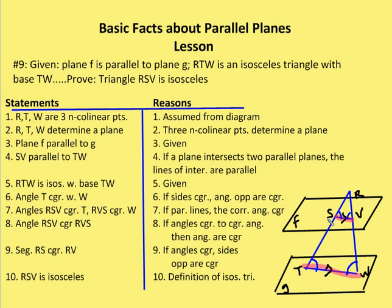If I have two angles that are congruent to congruent angles, then RSV and RVS are congruent to each other. Now I can say that segment RS is congruent with segment RV, because if angles are congruent in a triangle, the sides opposite them are also congruent. Now that RS and RV are congruent, I can say that triangle RSV is isosceles by the definition of isosceles triangle, which states that if a triangle has at least two congruent sides, then it is an isosceles triangle.